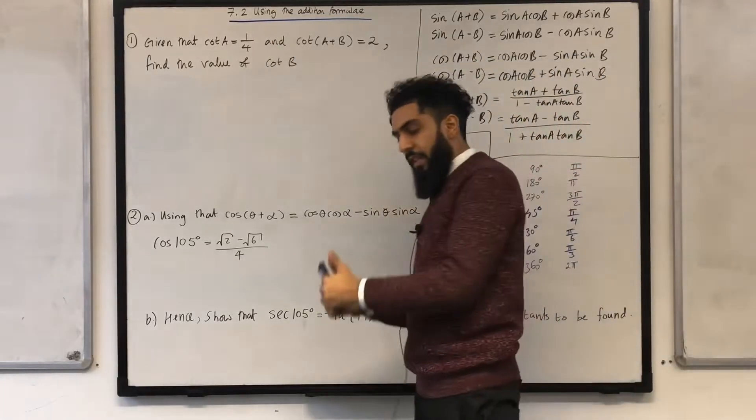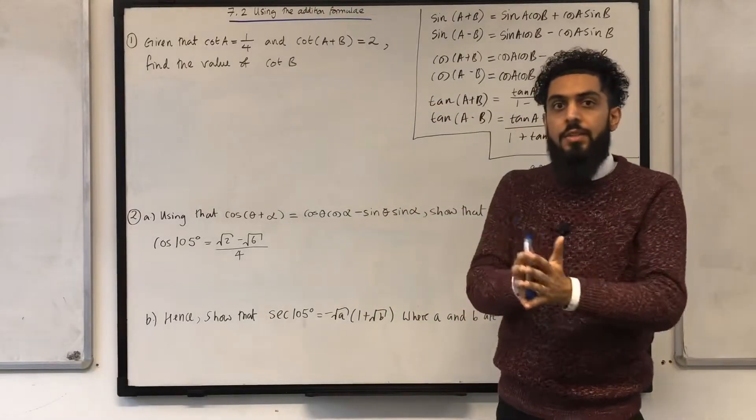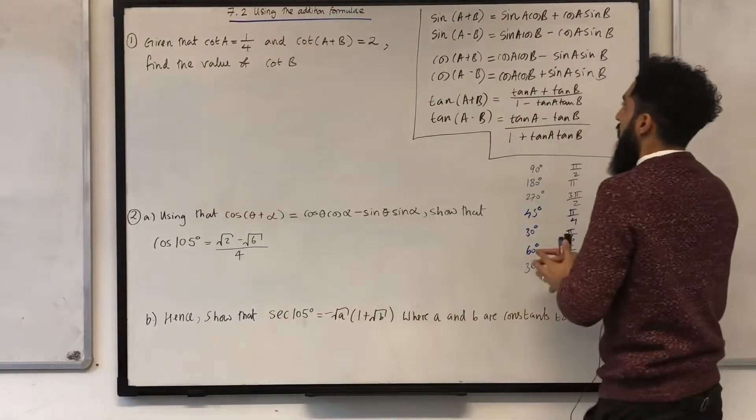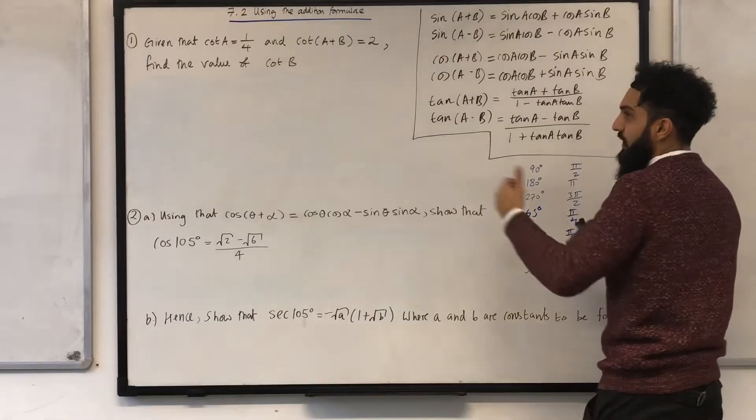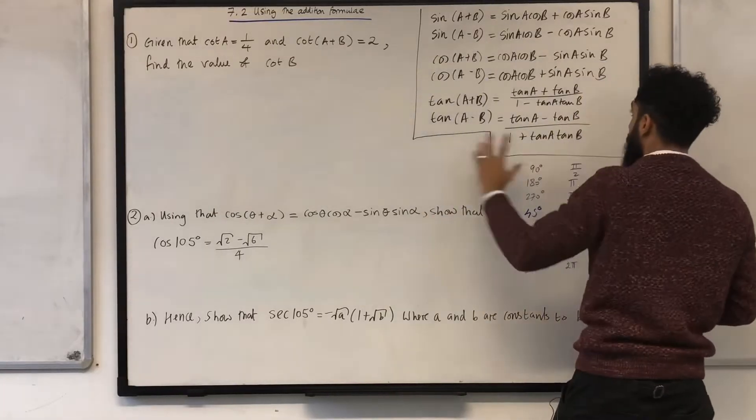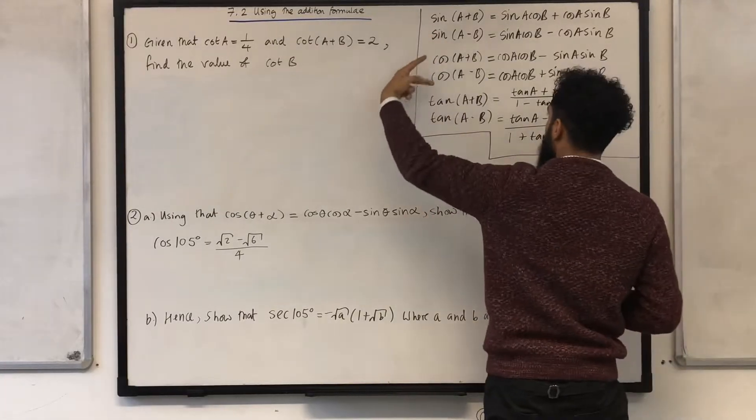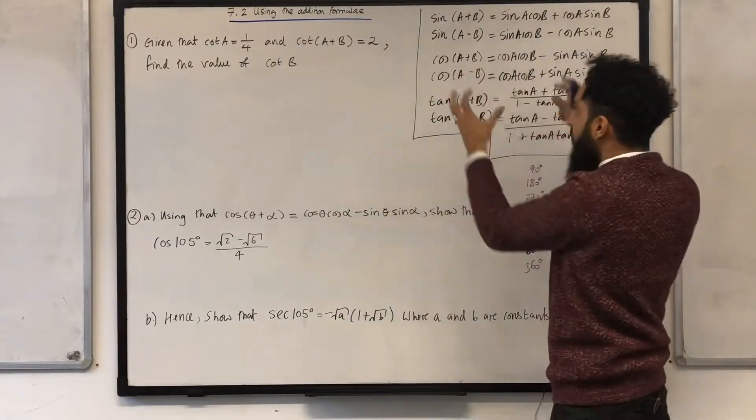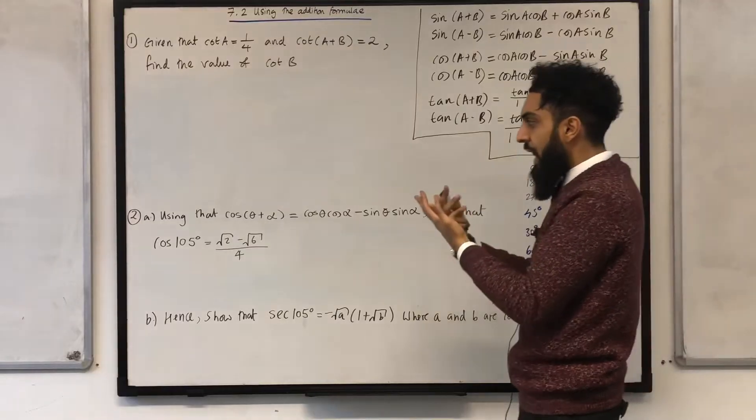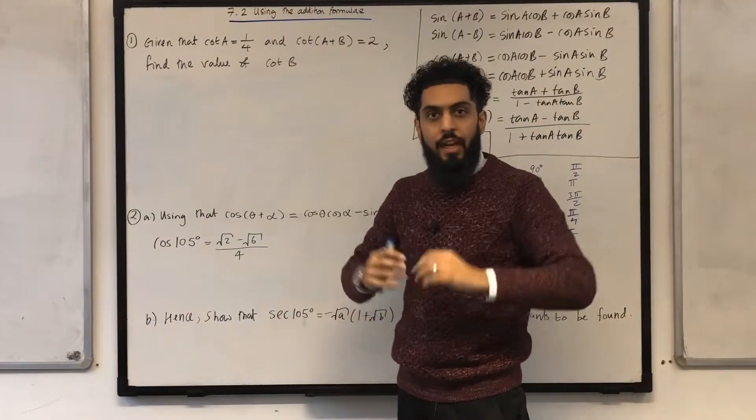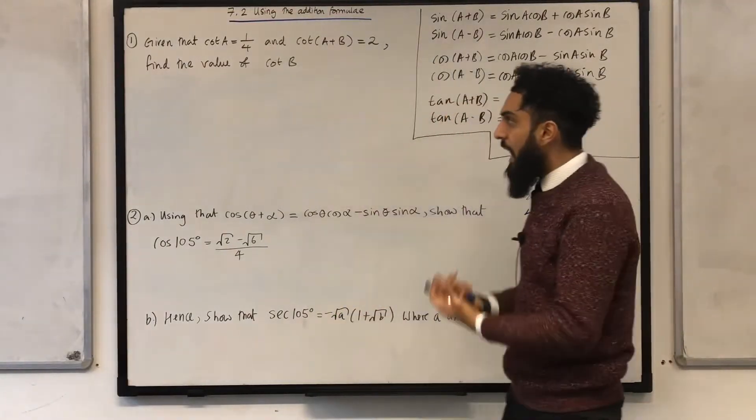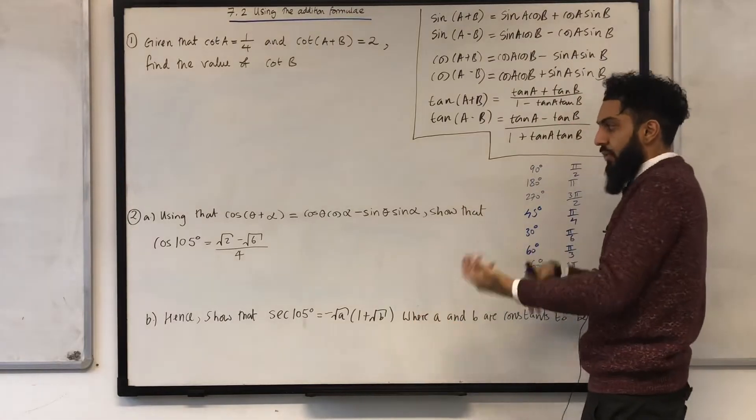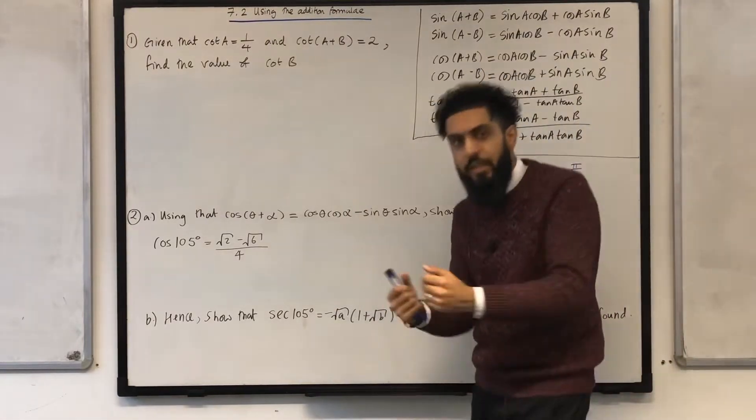If you look at my previous video tutorial, 7.1, the addition formulae, I covered the addition formulae for sine, cos, and tan, which is up on the board over here. 2 for sine, 2 for cos, 2 for tan. Then I went on to looking at how we can actually apply the addition formulae for sine, cos, or tan to questions. In today's video tutorial, I'll be applying the addition formulae for sine, cos, or tan to more crispy questions.